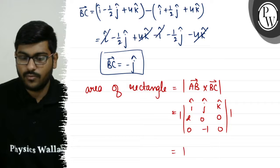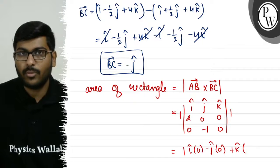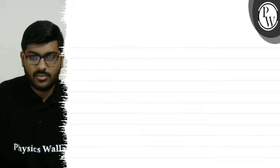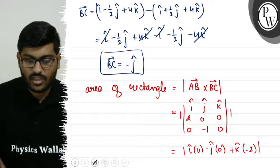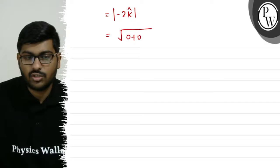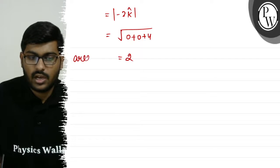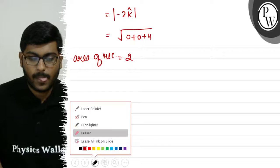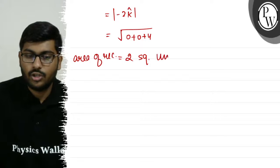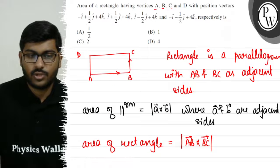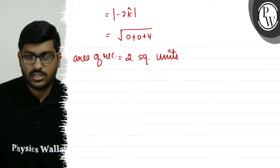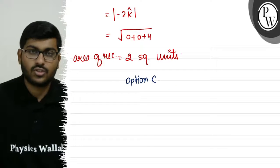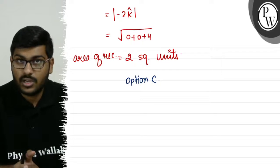Computing the cross product: i-cap into (0×0 − 0×(−1)) minus j-cap into (0×0 − 0×2) plus k-cap into (2×(−1) − 0×0), which gives minus 2k-cap. The modulus of minus 2k-cap is the square root of 0 + 0 + 4, which equals 2. So the area of the rectangle is 2 square units. The answer is option C. I hope you understood the solution. Thank you.